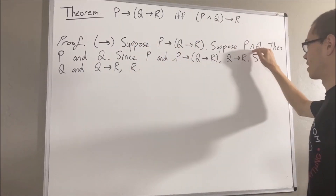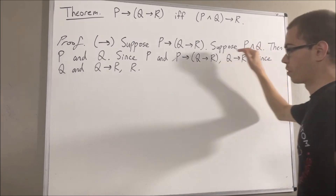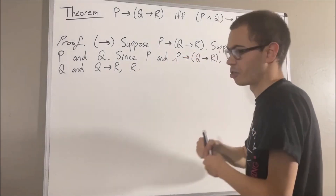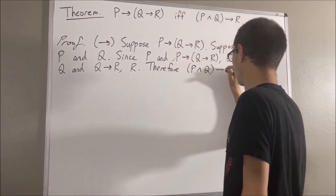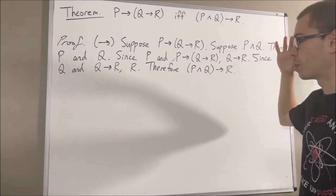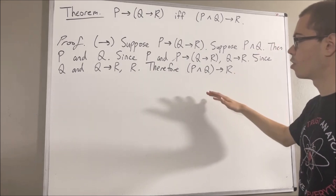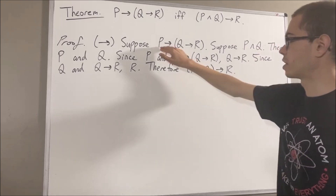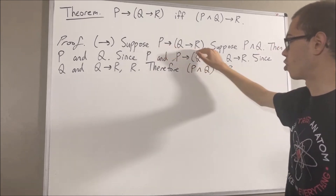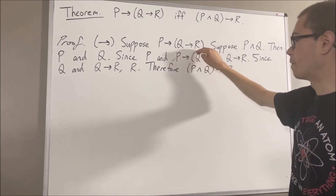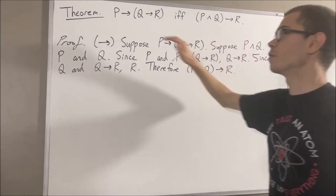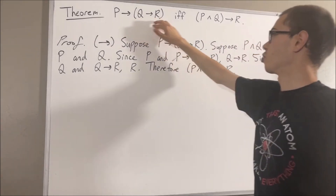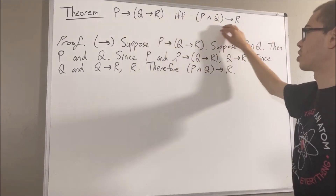Therefore, if P and Q is true, then R is true. So putting this all together, we see that under the assumption that P implies (Q implies R) is true, it follows that (P and Q) implies R is true. So we have proven the forward direction.